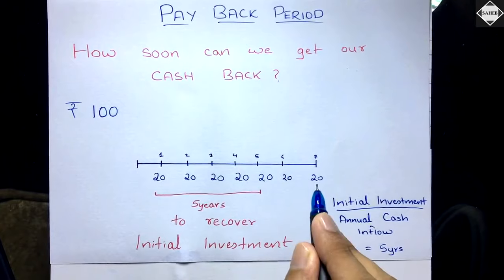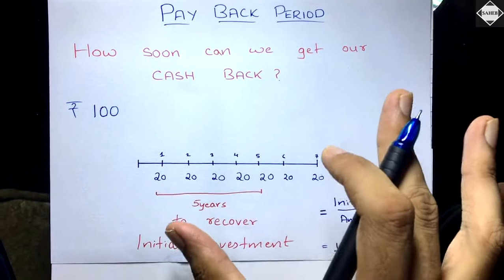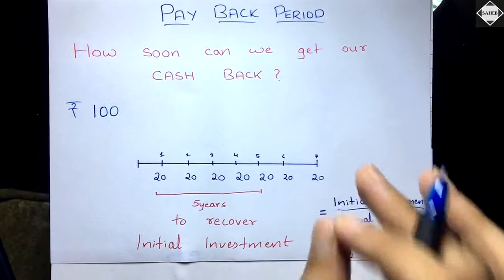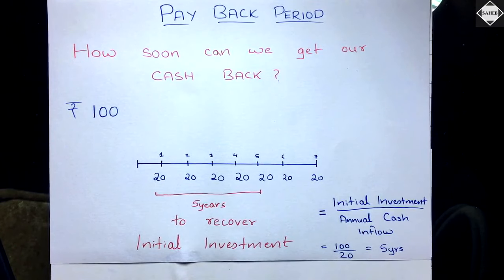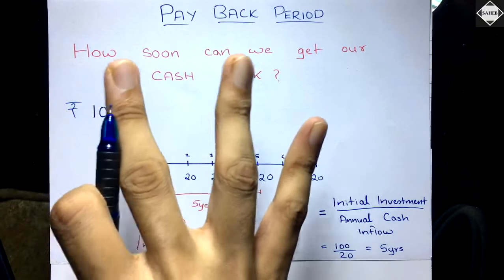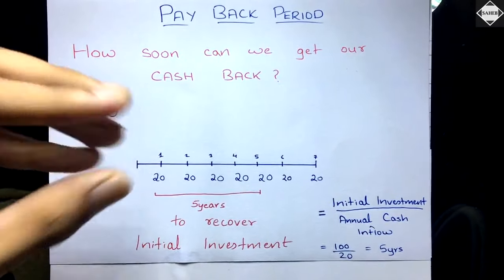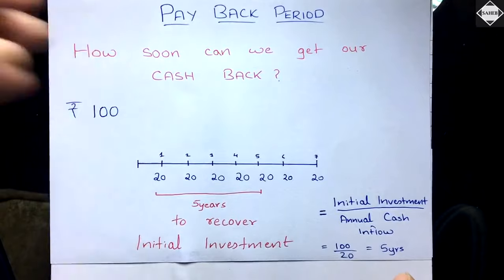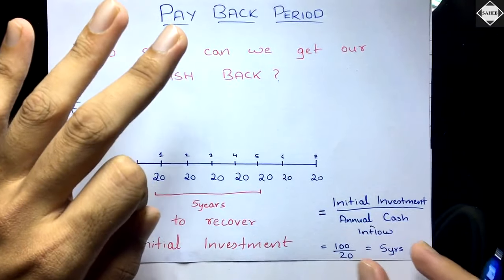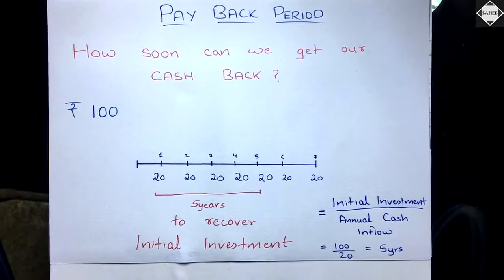You can use that formula only when the cash flows are constant. The decision criteria in simple payback: the general rule is to select the project which has the shortest payback period — the sooner we get our money back, the better. Sometimes management will tell you a maximum cutoff, say three or four years. If your project's payback period exceeds that, you must reject the project.